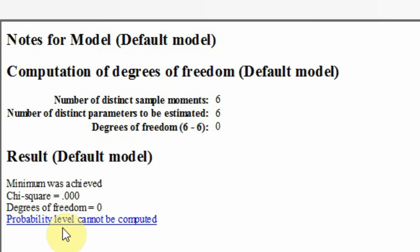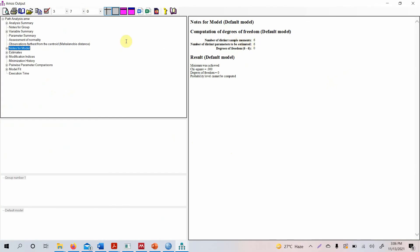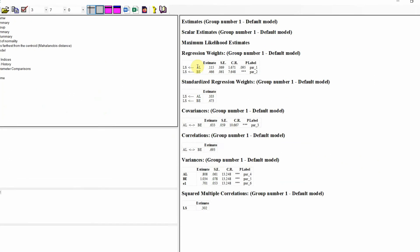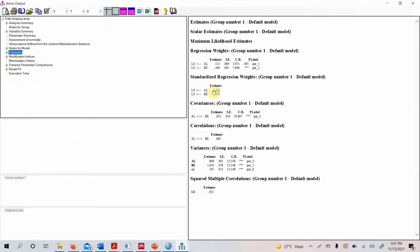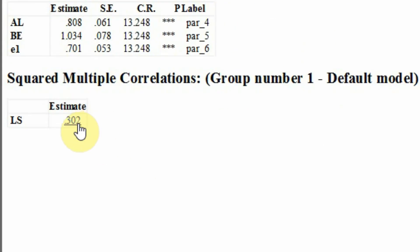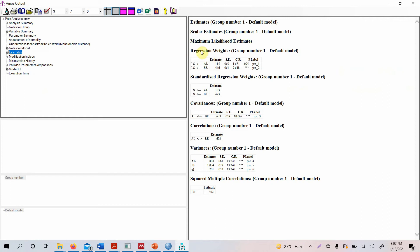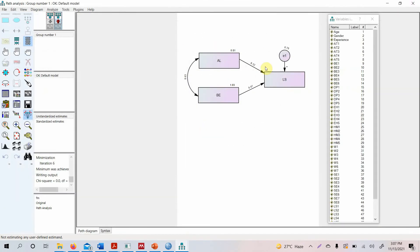Looking at the output: the probability level cannot be computed because there are zero degrees of freedom. However, we can still examine the estimates. Authentic leadership is not significantly affecting life satisfaction (p > 0.05), while ethical behavior does have a significant impact on life satisfaction (p < 0.001, three stars). The standardized regression weights are what we report. The R-square is 0.302 — meaning 30.2% of the variance in life satisfaction is explained by these two predictors.